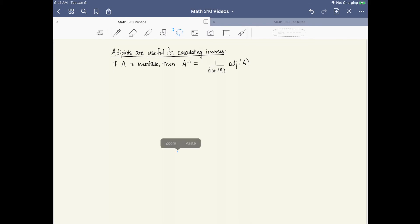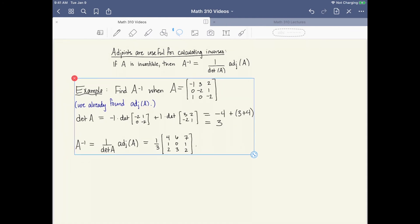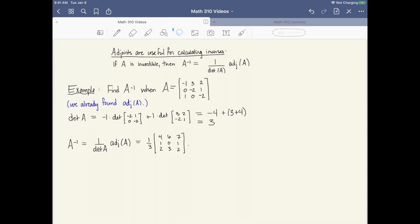So if we take our previous 3 by 3 matrix for a sample calculation, we've already gone to the effort of calculating all of those cofactors. And so in order to find A inverse, we would just need to calculate the determinant of our original matrix A. So our original matrix was this one. And then you can do a little cofactor expansion in order to calculate its determinant. Here I'm taking cofactor expansion along the first column. So I have minus 1 times the smaller 2 by 2 matrix. And then I have plus 1 coming from the entry in spot 3, 1 times this smaller matrix. And that works out to be 3. So for my entire inverse, I would have 1 over 3 times the adjoint that I calculated before. And that would give me A inverse.